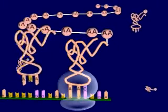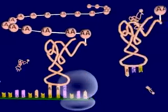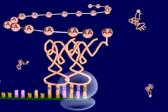As the process continues, a chain of amino acids is formed until the ribosome reaches a stop codon on the messenger RNA strand.